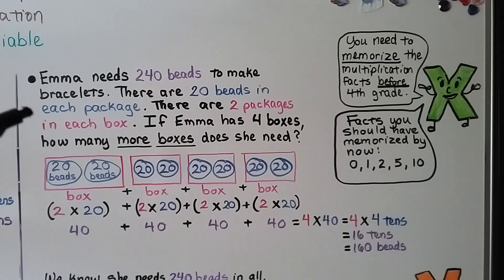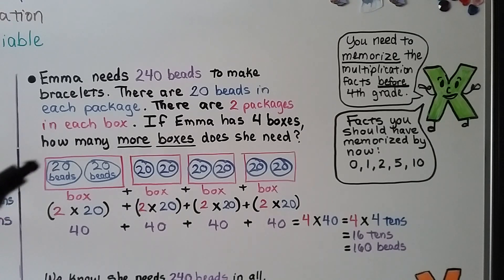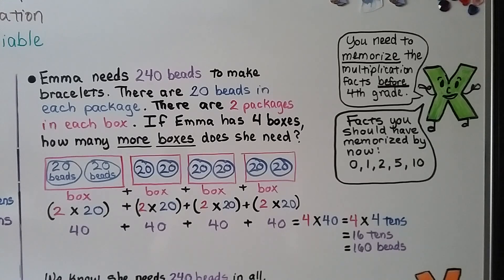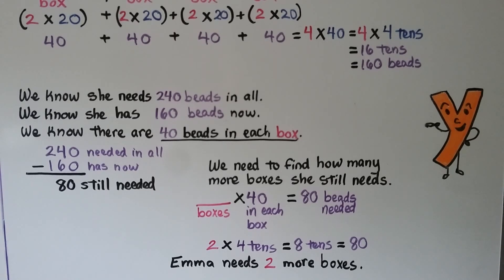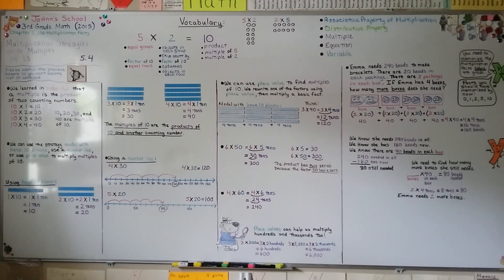By breaking this problem into smaller pieces, figuring out with a diagram how many beads are in a box, and using place value to multiply, that all helped us. In order for Emma to have 240 beads, she needs two more boxes of 40. Because any multiple of 10 has a zero in the ones place, the ones digit of the product will always be zero. We're going to talk more about multiplying with multiples of 10 in Lesson 5.5. I hope you'll be there, and I hope you have a really good day!